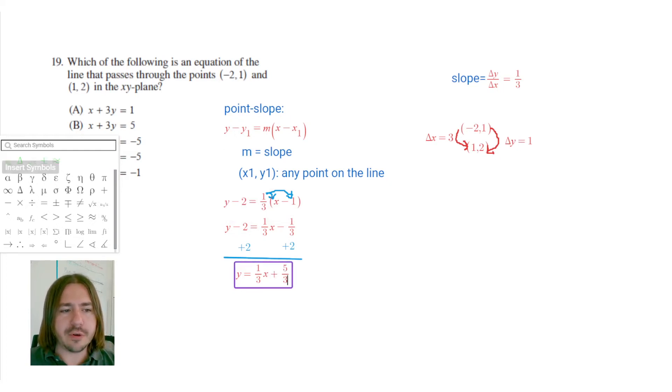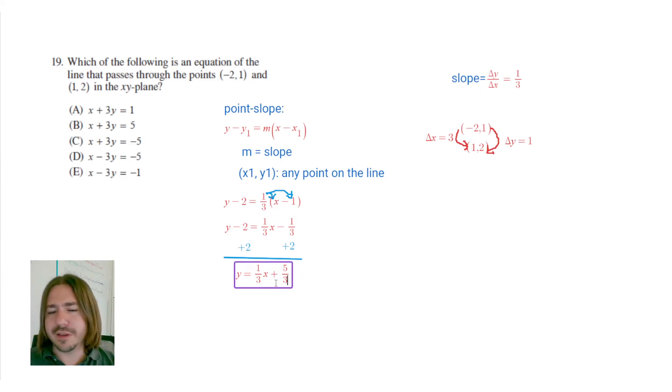We're almost there. Notice how none of the answer choices have fractions in there. And that's because generally when you're writing an equation in standard form, the most accepted definition requires that you have no fractions as any of the coefficients. So to clear these fractions, I'm just going to multiply the entire equation by 3 because both of those denominators are 3. So when I do that, I'll get 3y equals x plus 5.